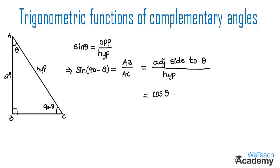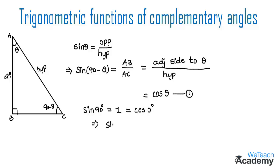Hence we can say that sine 90 minus theta is equal to cos theta. Let us name this equation 1. We already know that sine 90 degrees equals 1, which equals cos 0 degrees, and sine 0 degrees equals 0, which equals cos 90 degrees. Let us name this equation 2.